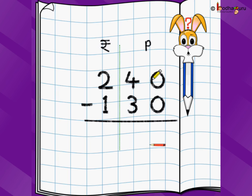What do we do now? You start again from the rightmost position that is from the one's position of the paise and you start doing subtraction. 0 minus 0 is 0, 4 minus 3 is 1, 2 minus 1 is 1.